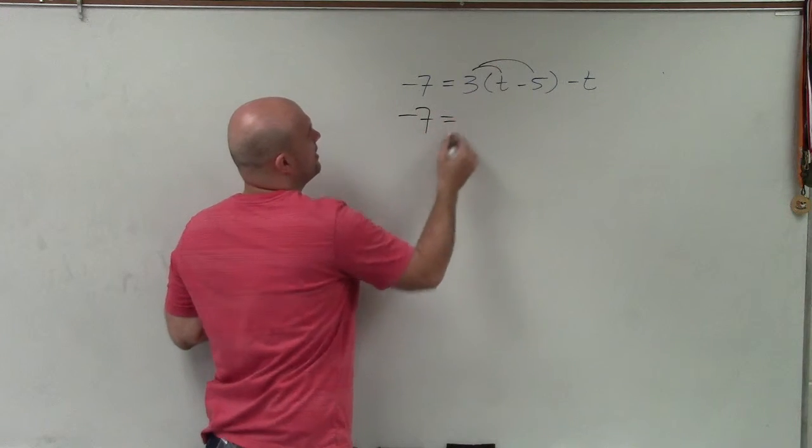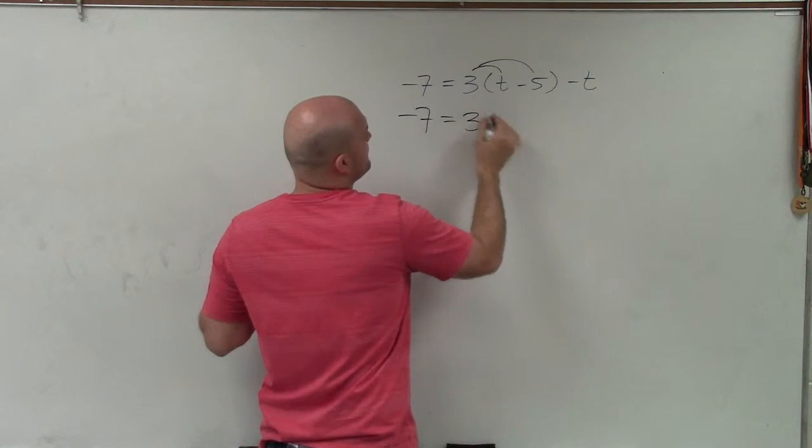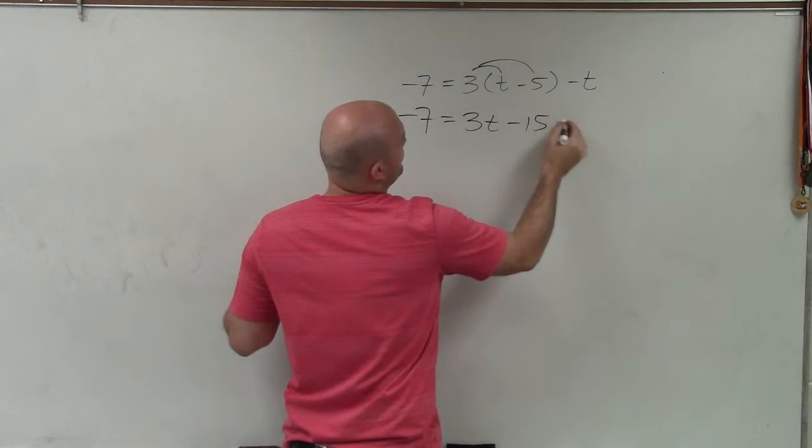So when I go and apply my multiplication, I get 3 times t is 3t, 3 times negative 5 is negative 15 minus t.